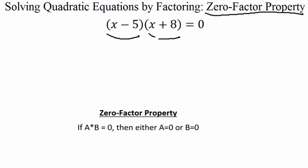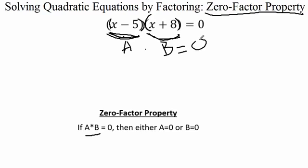The zero factor property states: if we have a times b — where our first factor is a and our second factor is b — and these are multiplying together set equal to zero, then either a is equal to zero or b is equal to zero. If we have a times b equals zero, the only possible way to get zero from multiplication is if one of our factors is zero.